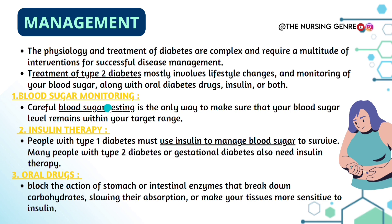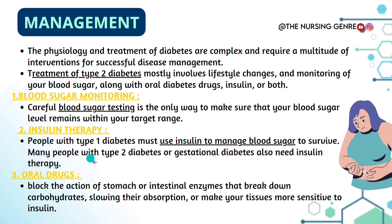First management strategy: Monitoring your blood sugar. Careful blood sugar testing is the only way to make sure that your blood sugar level remains within your target range. Second: Insulin therapy. People with type 1 diabetes must use insulin to manage blood sugar to survive. Many people with type 2 diabetes and gestational diabetes also need insulin therapy.